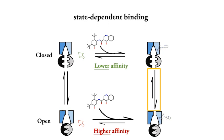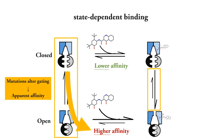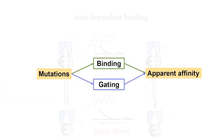This idea of state-dependent binding suffices to explain how CFTR potentiators work, but it predicts that mutations that alter CFTR gating can also alter the apparent affinity of the drug by shifting the distribution of the channels to the open state or to the closed state. Therefore, it is an arduous challenge to use a mutational approach to identify the binding sites, because it is difficult to tell if the mutations affect drug binding directly or cause changes in gating which secondarily alter the apparent affinity. This is a precaution raised by Davy Cahoon in 1998.